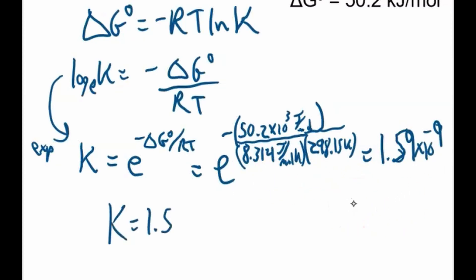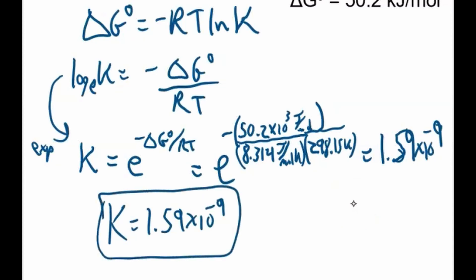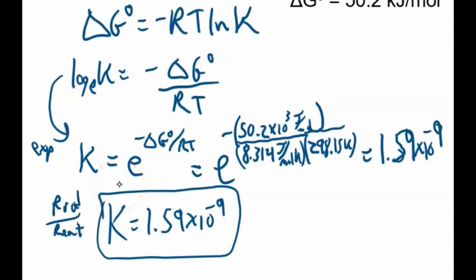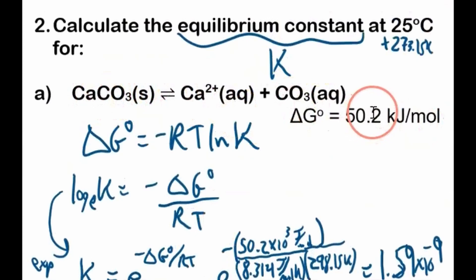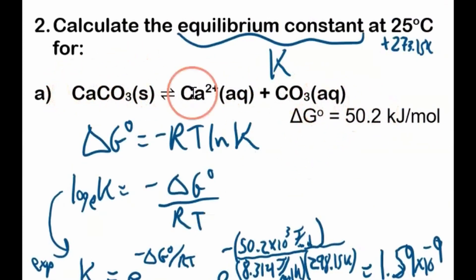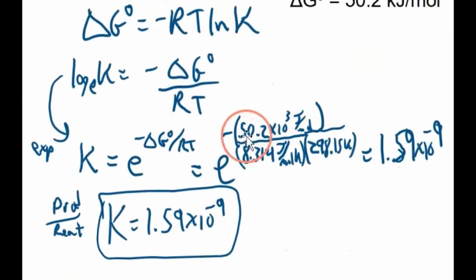So K = 1.59 × 10⁻⁹. This is a very small number. Since K = products/reactants, a small K means we have a lot of reactants — the reactants are favored. And because ΔG° is positive, the reaction is spontaneous to the left under these conditions.